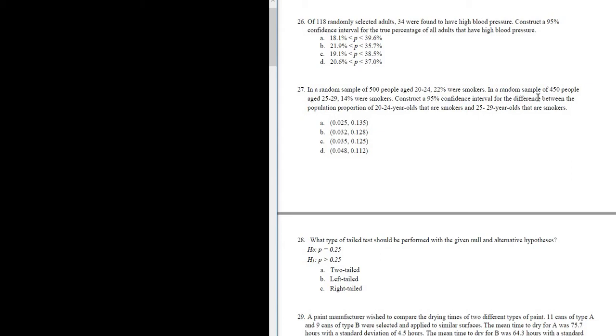Construct a 95% confidence interval for the difference between the population proportion of the 20 to 24-year-olds that are smokers and the 25 to 29-year-olds that are smokers. So we have a question asking us for a confidence interval for the difference between proportions, and it's 95%. We basically have to find N and X for each group.